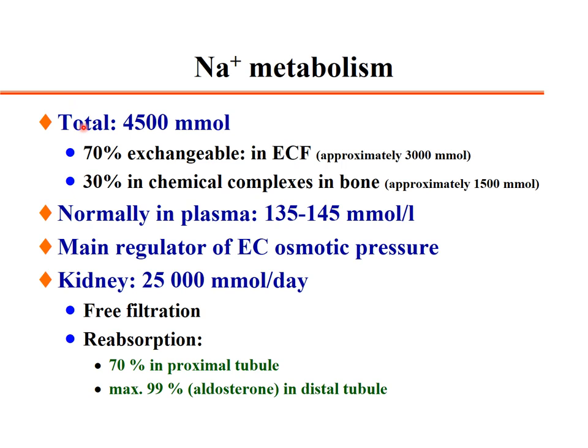Sodium metabolism: total sodium content of the body is about 4.5 mol. About 70% is exchangeable in the extracellular fluid, approximately 3 mol, while 30% is chemically complexed with bone, about 1.5 mol. Normal plasma sodium concentration ranges from 135 to 145 mmol per liter. Sodium is the main regulator of extracellular osmotic pressure.